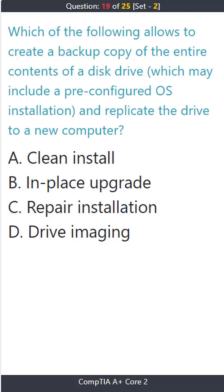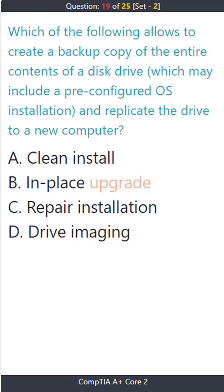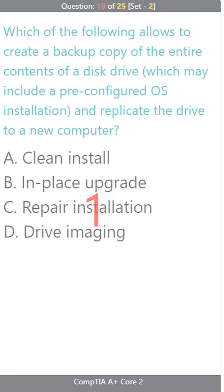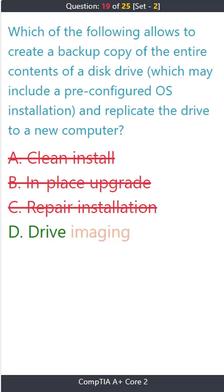Question 19. Which of the following allows you to create a backup copy of the entire contents of a disk drive — which may include a pre-configured OS installation — and replicate the drive to a new computer? A) clean install, B) in-place upgrade, C) repair installation, D) drive imaging. The correct answer is D) drive imaging.